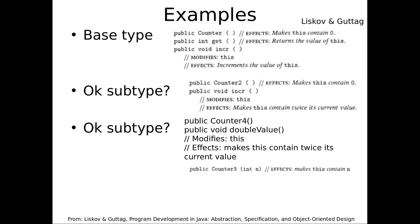This can lead to situations where someone who only knows about Counter — they don't know someone created a Counter 3 and passed it to their code — had their code count on the value being zero or more. Someone eventually wrote Counter 3 and passed it in with a negative value, and their code which was counting on it being zero or more breaks. Could you imagine that happening? Yes — particularly the night before ID 5 is due.